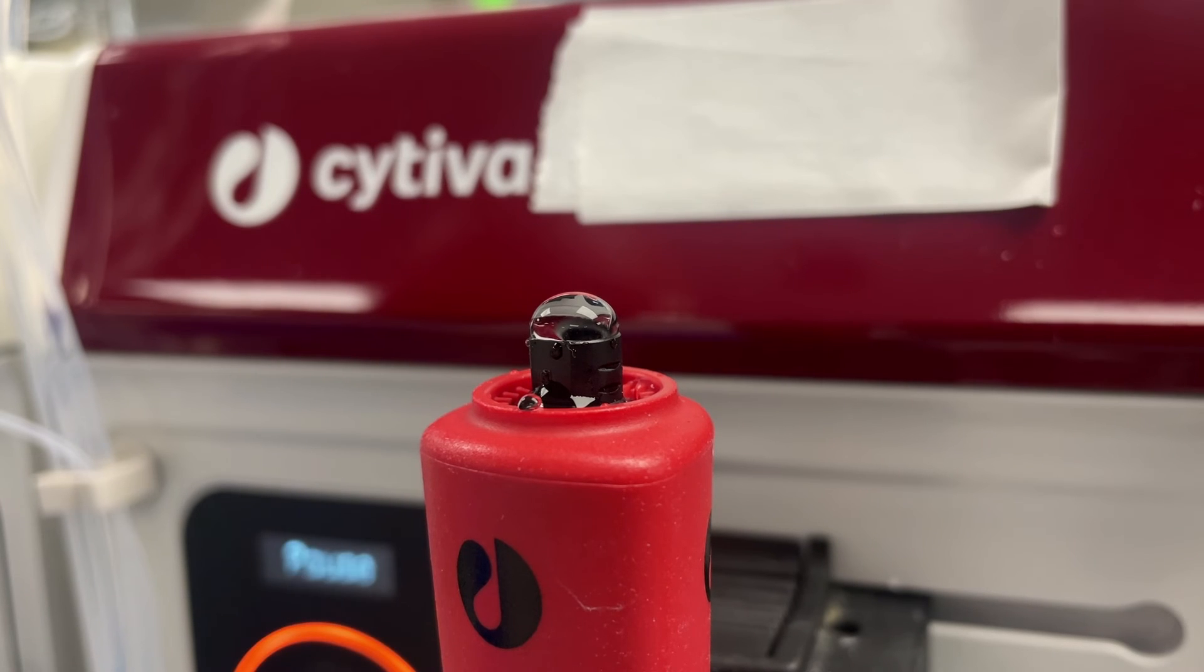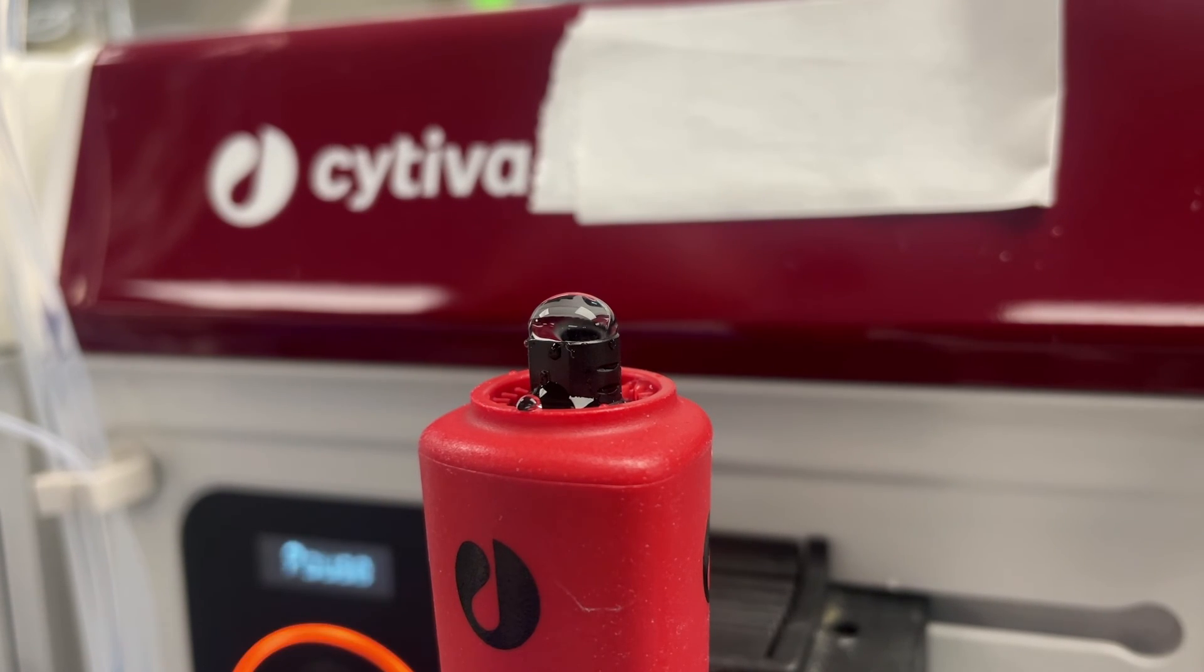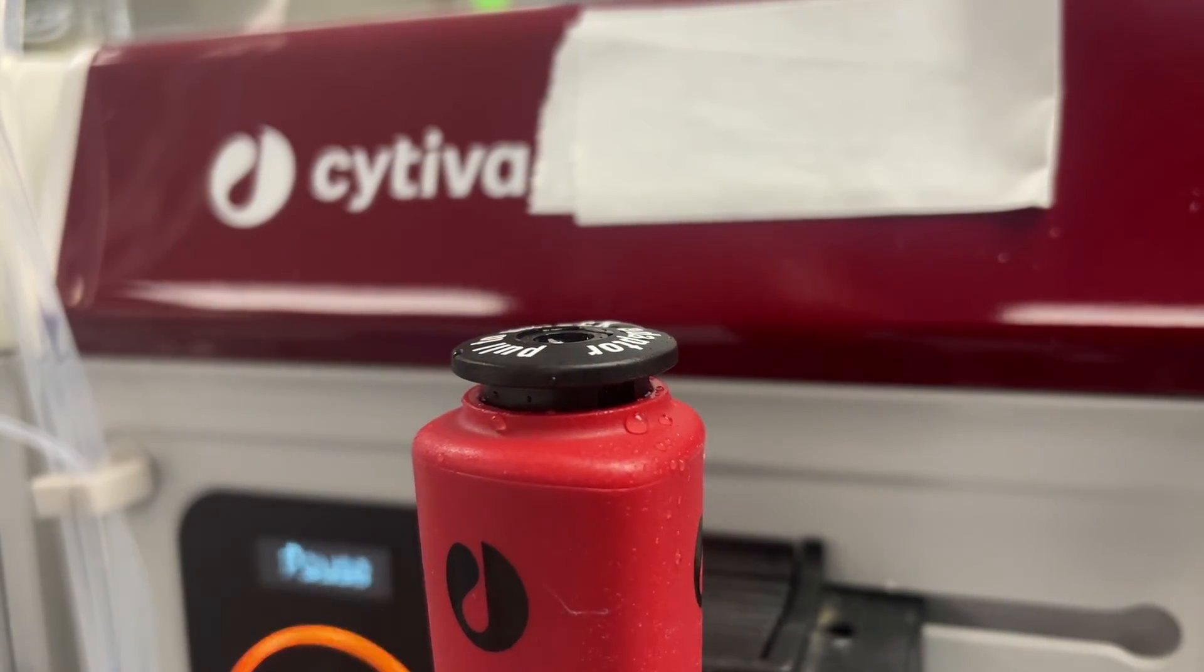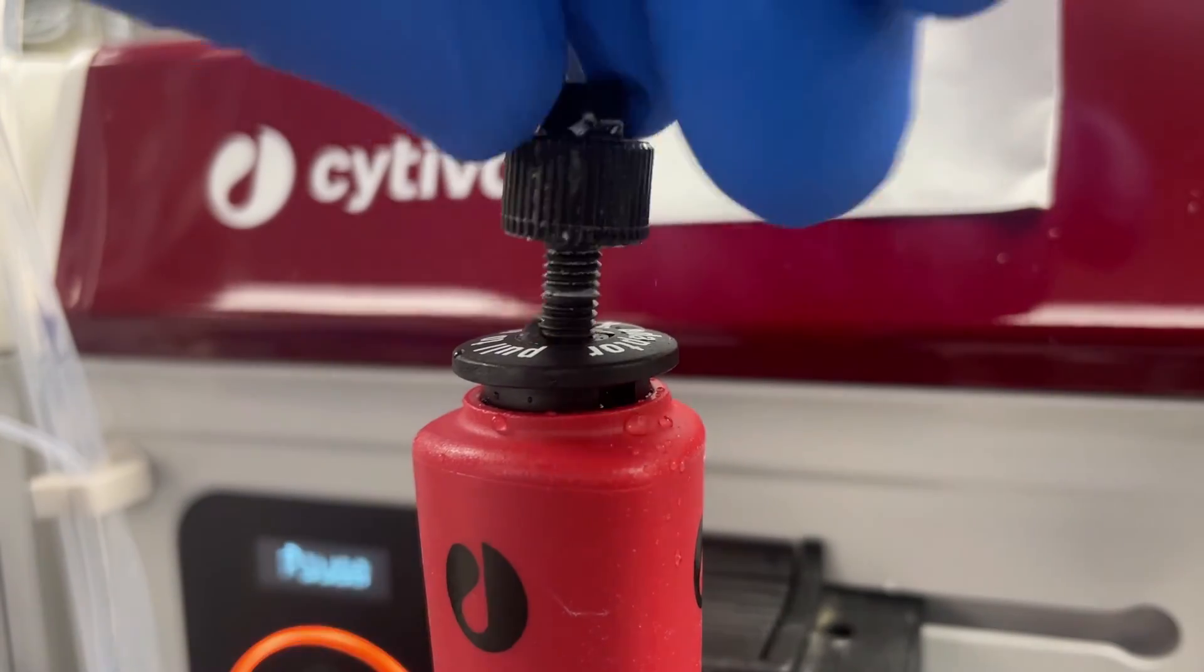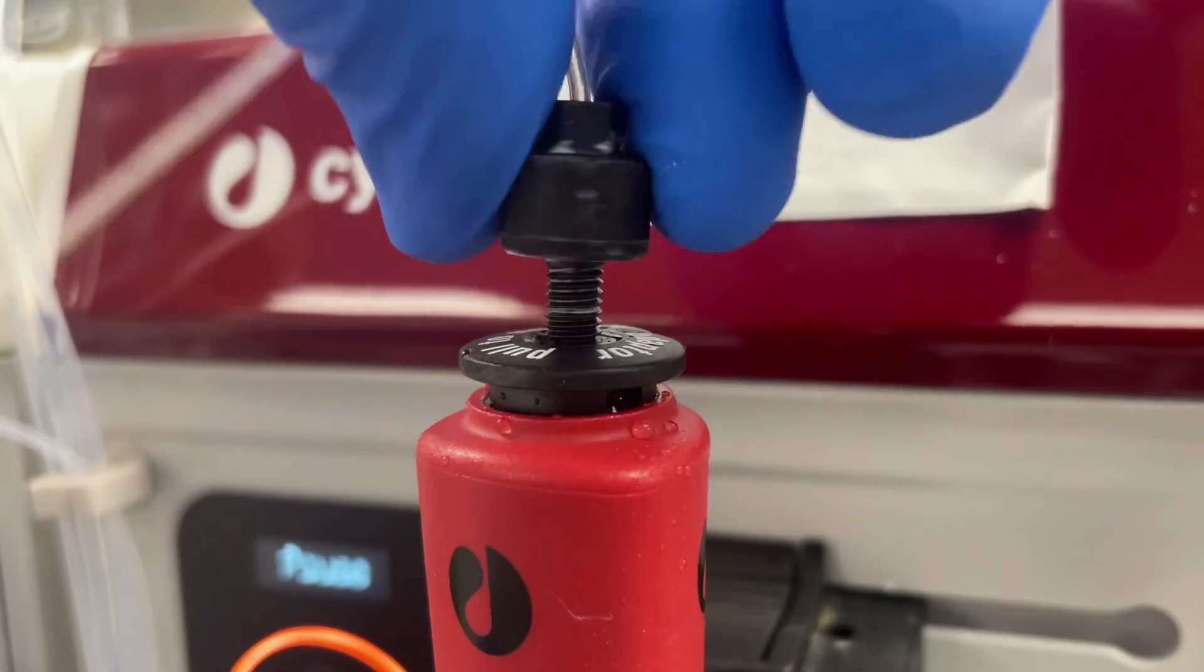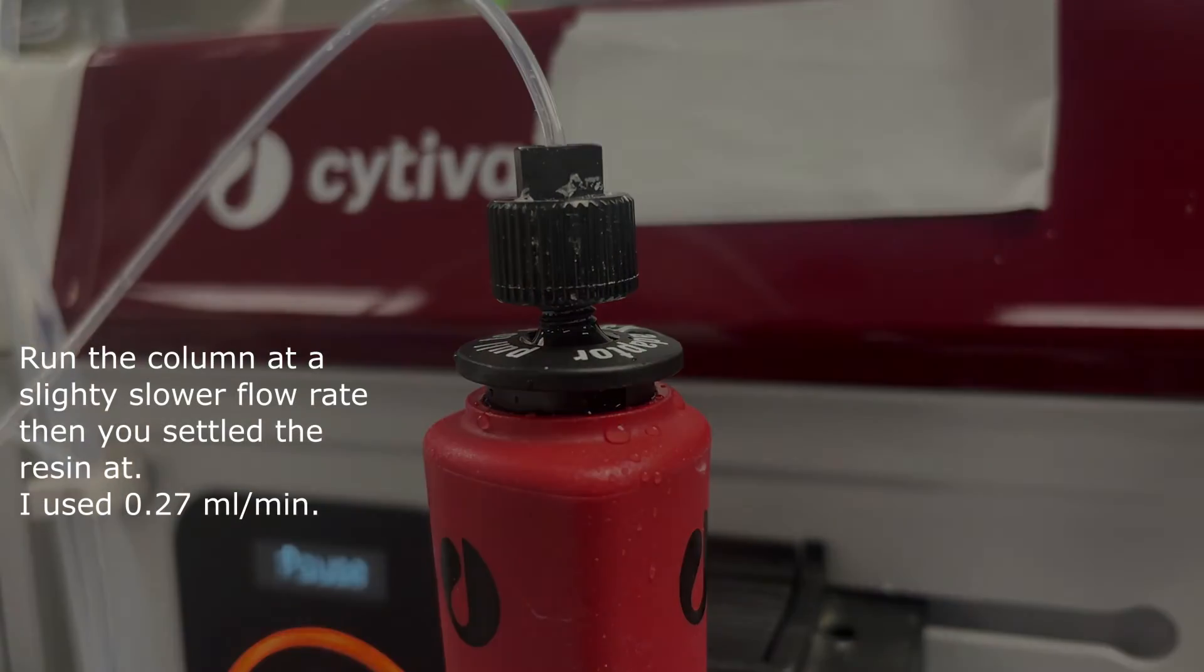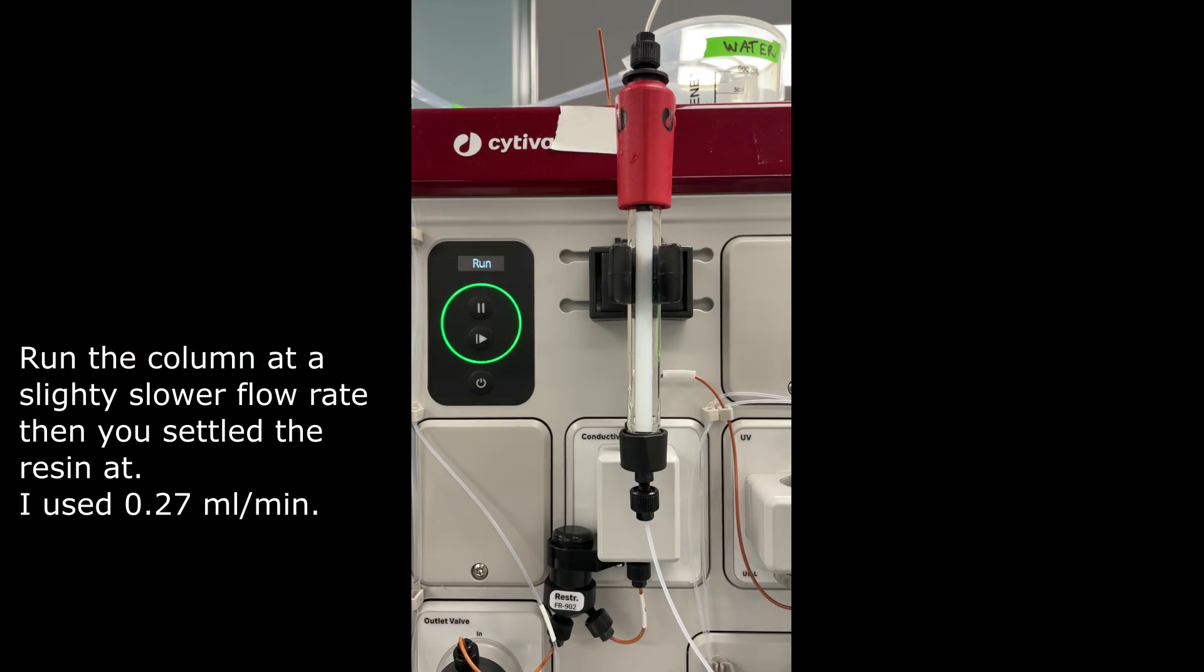Alright, we'll put the lock on top of the adapter just to keep us from turning it anymore and messing up the resin bed, and we'll hook it back up to the chromatography system so we can run it a little bit longer. That will help us make sure that the bed is stable in case we need to do some readjustments or anything.